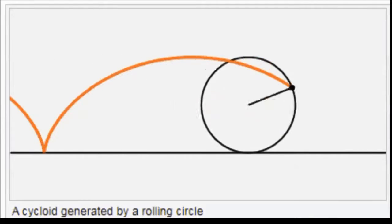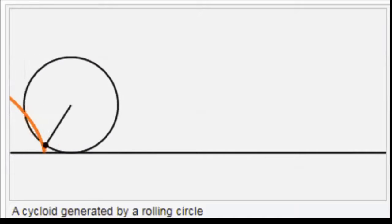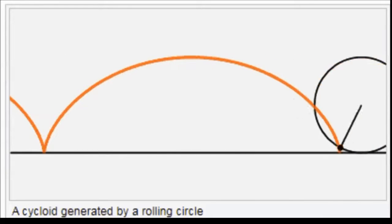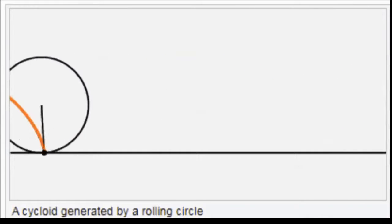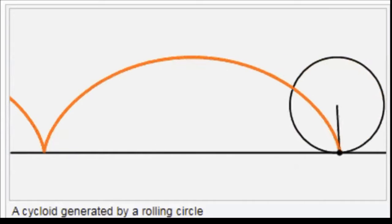The cycloid is defined as the locus of a point on the circle as the circle is allowed to roll along a given straight line without slipping.